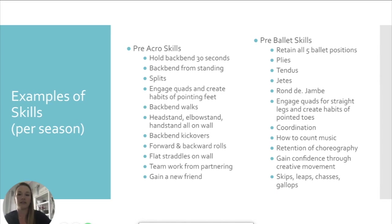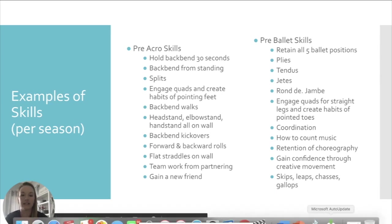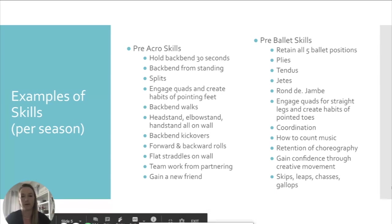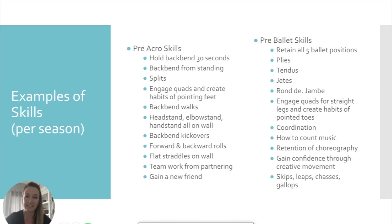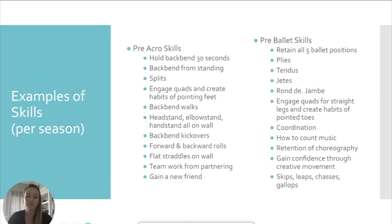For the pre-acro curriculum, by the end of the season students should be able to hold their backbend for 30 seconds and do a backbend from standing splits. For pre-ballet, there's a full list of steps they should be able to do by end of season. The approach is: write out everything you want them to be able to do, then cater every lesson toward those skills.